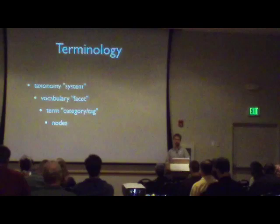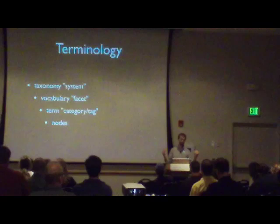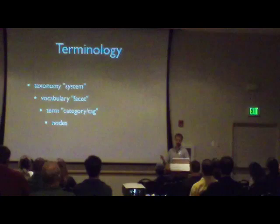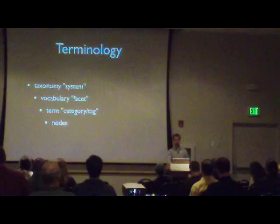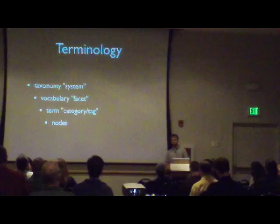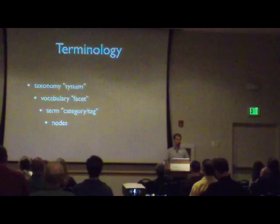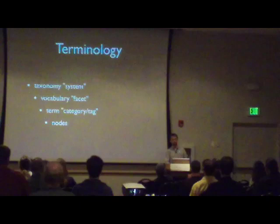For example, red if the vocabulary is color, or Arnold Schwarzenegger would be the actual term if the vocabulary is actors. Those terms are applied to nodes, and as far as I know, Drupal's taxonomy system is geared around tagging nodes — it's not really geared around tagging other things. I'm pretty sure somebody has already thought of a way to tag users with taxonomy terms, but I haven't found it yet.